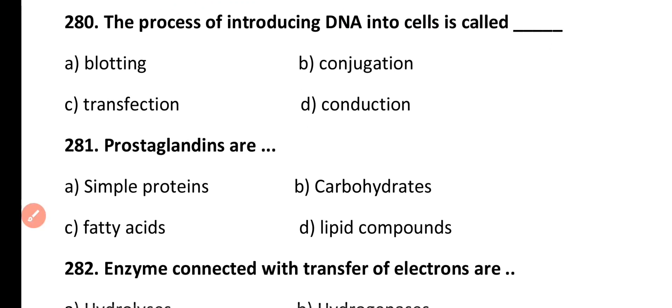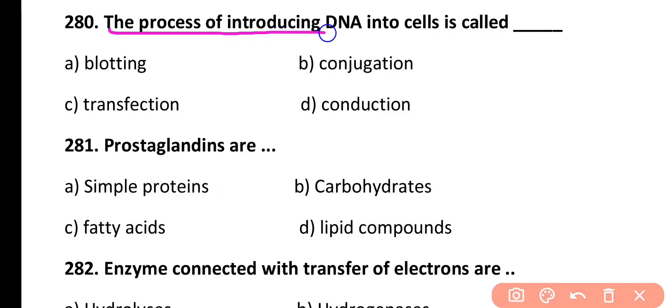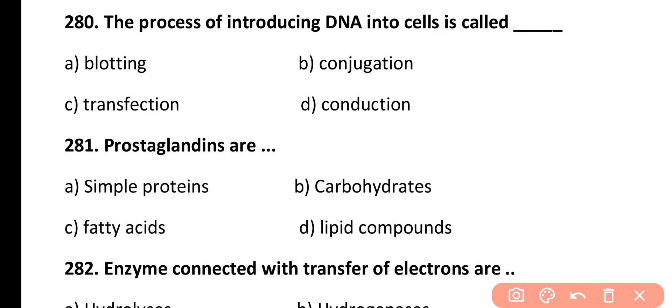Question 280. The process of introducing DNA into cells is called: blotting, conjugation, transfection, or conduction. Correct answer is Option C. In eukaryotic cells, introducing foreign DNA is called transfection. When done in prokaryotes, it is called transformation.